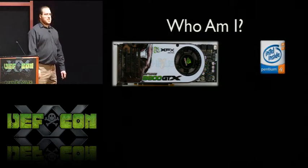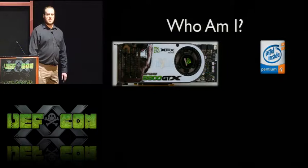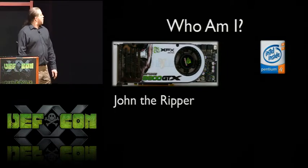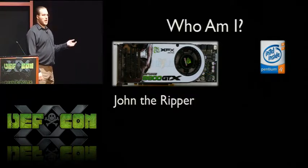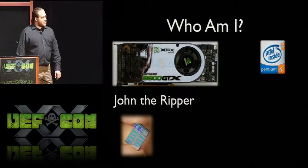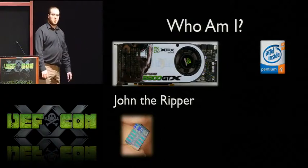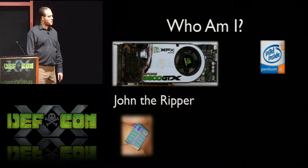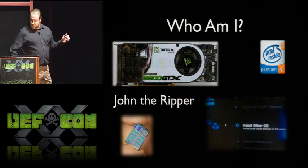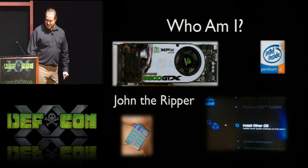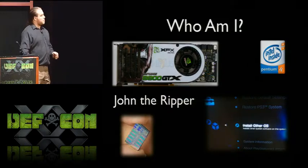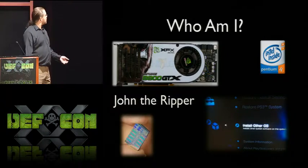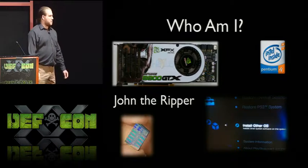Back when I started, the Pentium 4 was still the hot processor. Two threads in a system, and occasionally, if you were lucky, you could get access to a Xeon box with a few more threads. John the Ripper was the password cracking tool of choice. It worked incredibly well on Pentium 4s and other CPU-based systems. Sony had just come out with the PlayStation 3 running the cell processor, which was also a processor of interest for high-performance compute. Back when I started, you could actually still install Linux on a PlayStation 3.